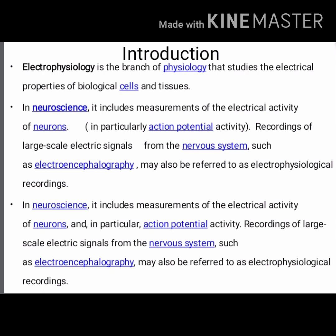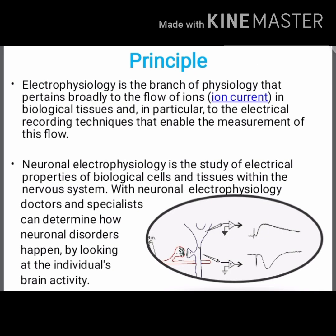The principle behind electrophysiology pertains broadly to the flow of ions — ionic current — in biological tissue, and particularly to the electrical recording techniques that enable the measurement of the flow of impulses or current. In neurological science, electrophysiology is the study of electrical properties of biological cells and tissue within the nervous system.